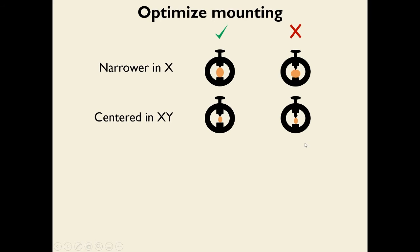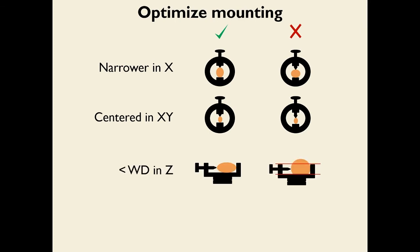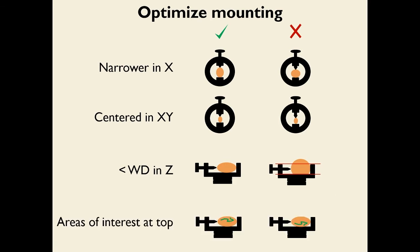The microscope has a working distance of about five millimeters — that is the height of the pedestals in the holder. You don't want samples that exceed that height because you won't be able to image all the way through them in the Z dimension, and you might also crash into them causing expensive problems. So try to keep at least one dimension of the sample below five millimeters. Finally, if the thing you're interested in is more on one side of the sample, place those things of interest towards the top so that photons have less material to traverse through.